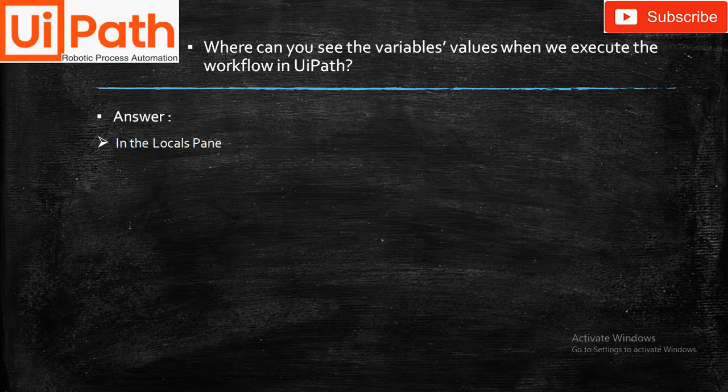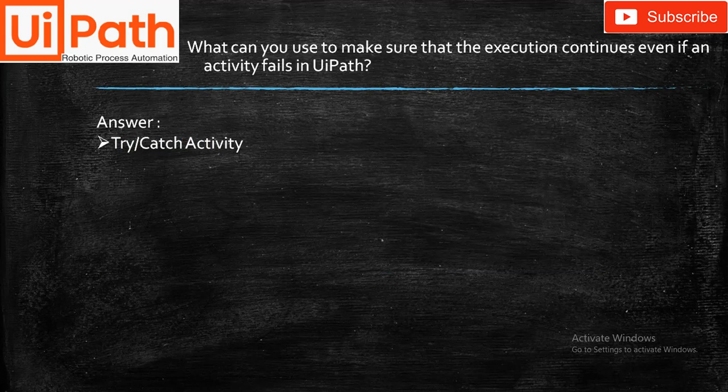The first question on set three: Where can you see the variable values when we execute a workflow in UiPath? Answer: The Locals Panel.